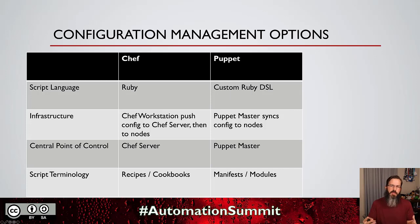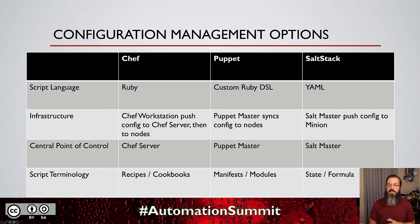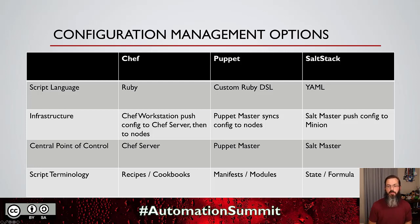On the Puppet side, there's a Ruby-based DSL customized for Puppet itself. The Puppet master syncs configuration out to the nodes and applies configurations as written. The Puppet master is the central point of control, and the terminology is manifests and modules — same concept as recipes and cookbooks, just different names. Then there's SaltStack, which was a favorite because of its Python foundation — there's a lot of Python under the covers. However, when writing configuration it's mainly written in YAML. You have a SaltMaster that pushes configuration out to the minions, which are the nodes. SaltMaster is the central point of control, and the terminology is state and formula.